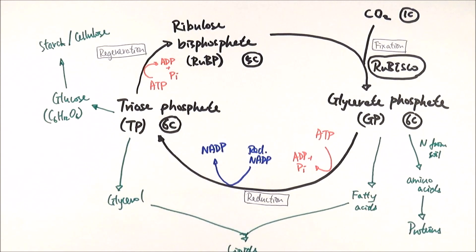And of course, apart from glucose, they can also turn triose phosphate into any other hexose sugars, for example, fructose as well.